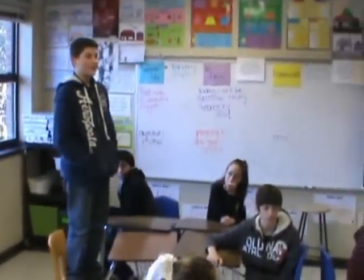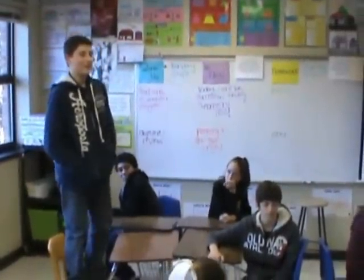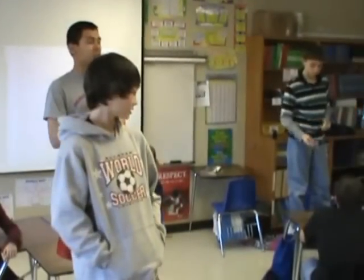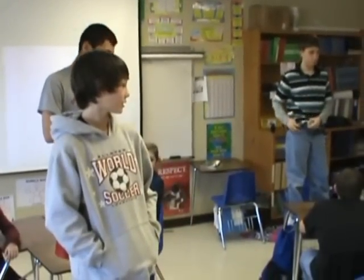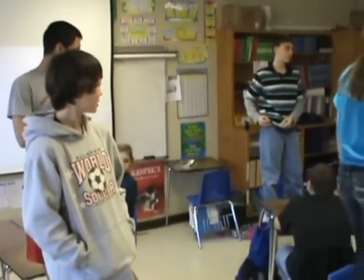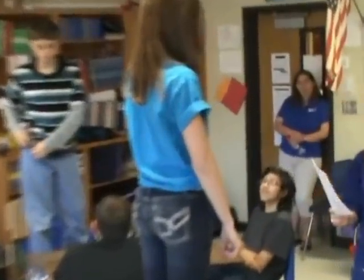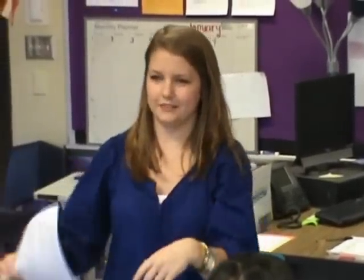Okay. Chad? A triangle with no congruent sides is a scalene triangle. Okay. A triangle with no congruent sides is a scalene triangle. Alright. A triangle with no congruent sides is a scalene triangle. A triangle with no congruent sides is a scalene triangle. Very good. Awesome. Very good. Y'all have a seat.